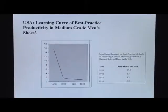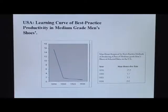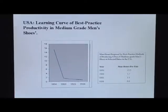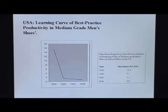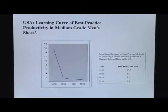Rich nations specialize where the learning curves are steep and export goods from steep learning curves, whereas poor nations tend to produce where the learning curves are low. The typical maquilas in Mexico are the labour-intensive activities where there is no more learning in the United States.